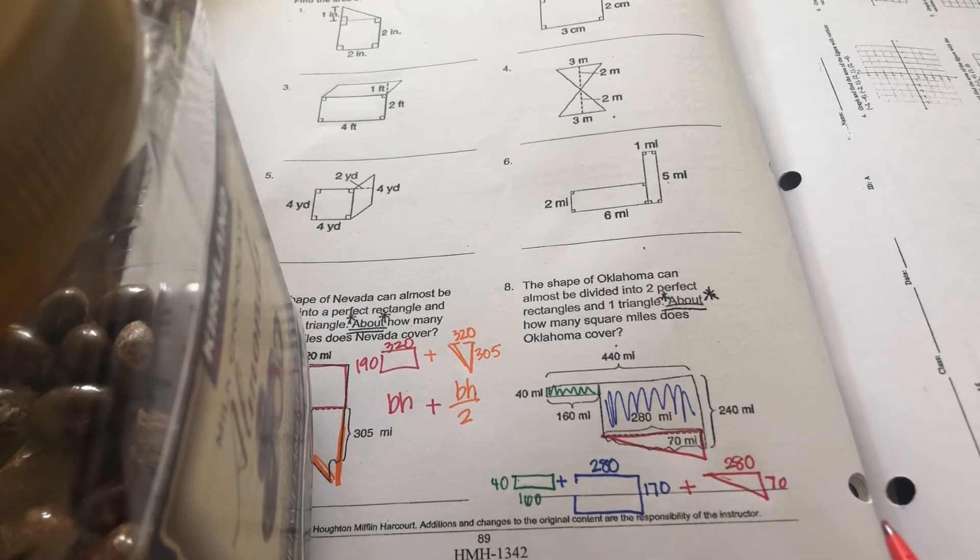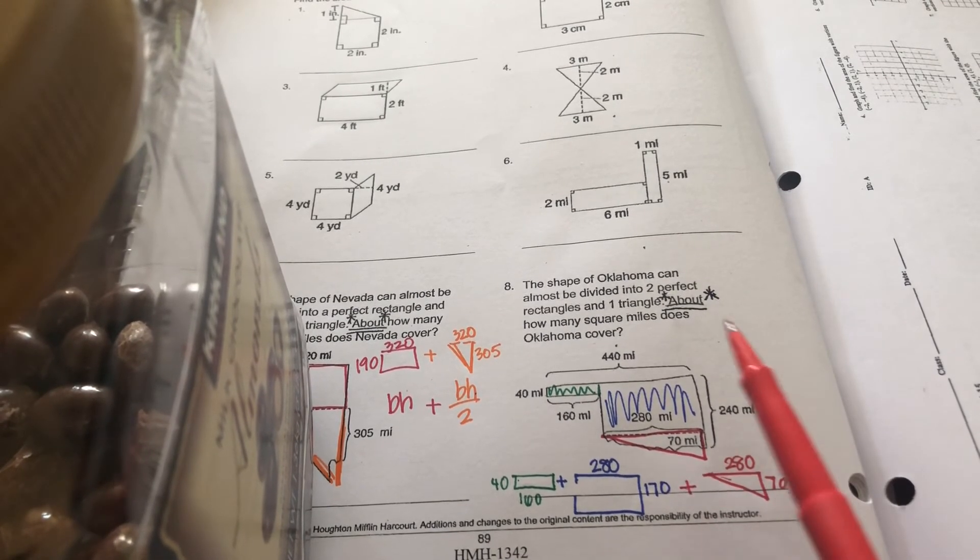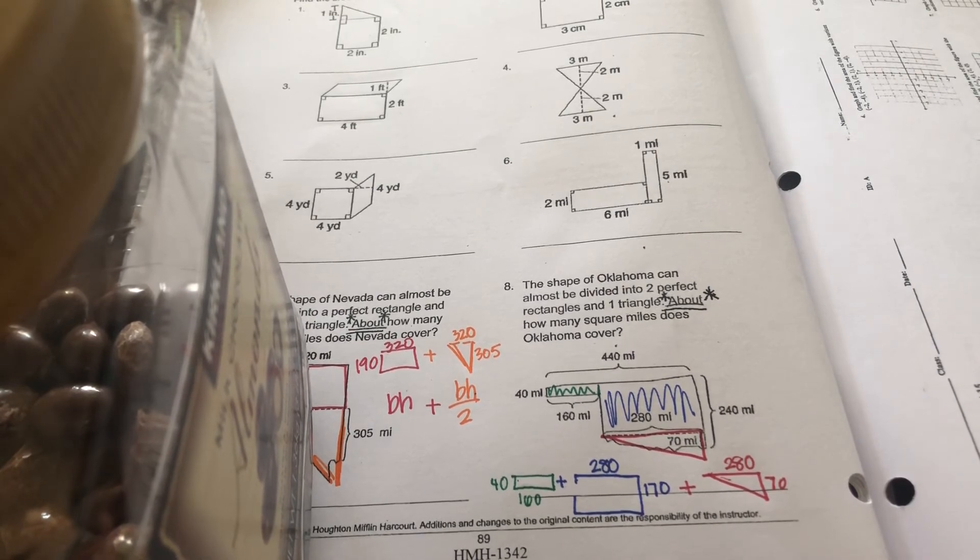Go ahead and add all those together. And that will give you the total area of that composite shape. And yes, I know it's not precise, but it says about. And always, always, always show your work on a separate sheet of paper.